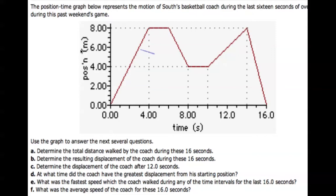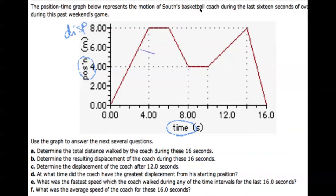Here we have a position and time graph. Remember that this is a displacement-time graph — I can call it a displacement-time graph because the unit is in meters. The question says the position-time graph below represents the motion of a basketball coach during the last 16 seconds of this past weekend's game. So this is the initial point, point zero — you should have an intuition of this first.